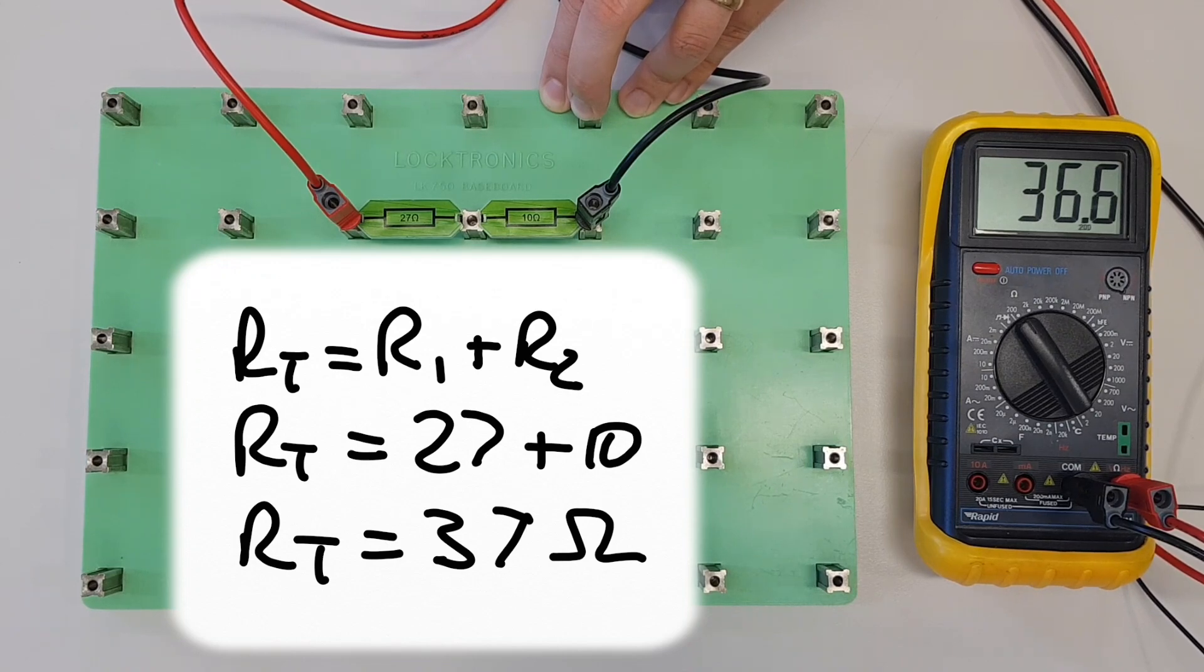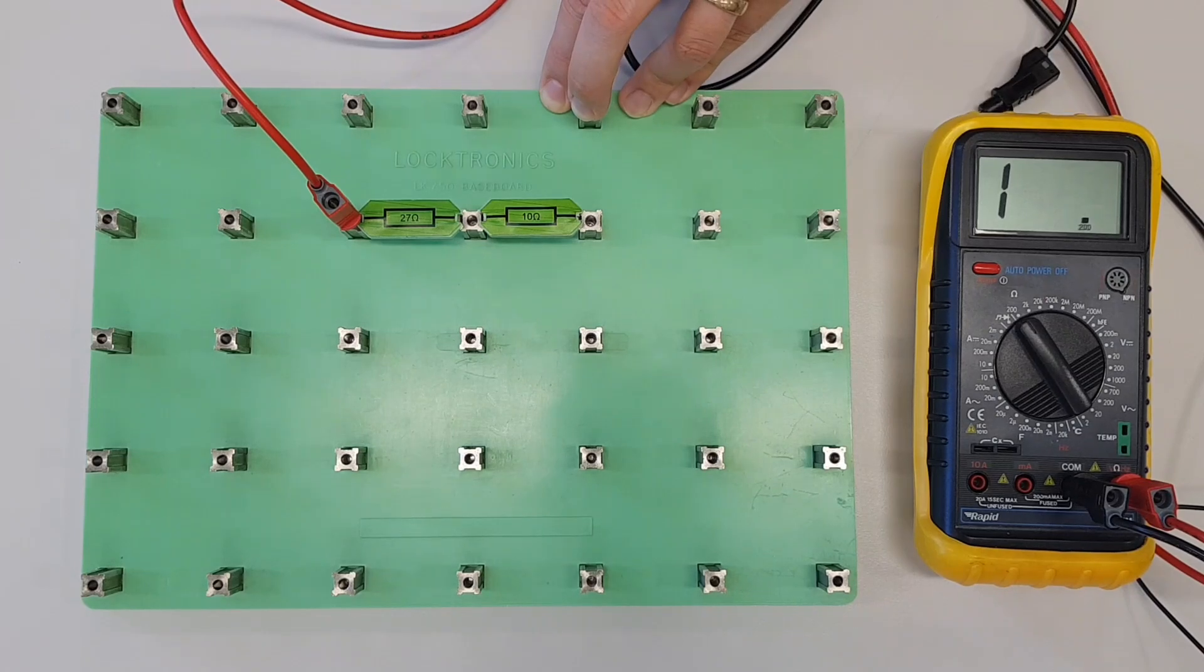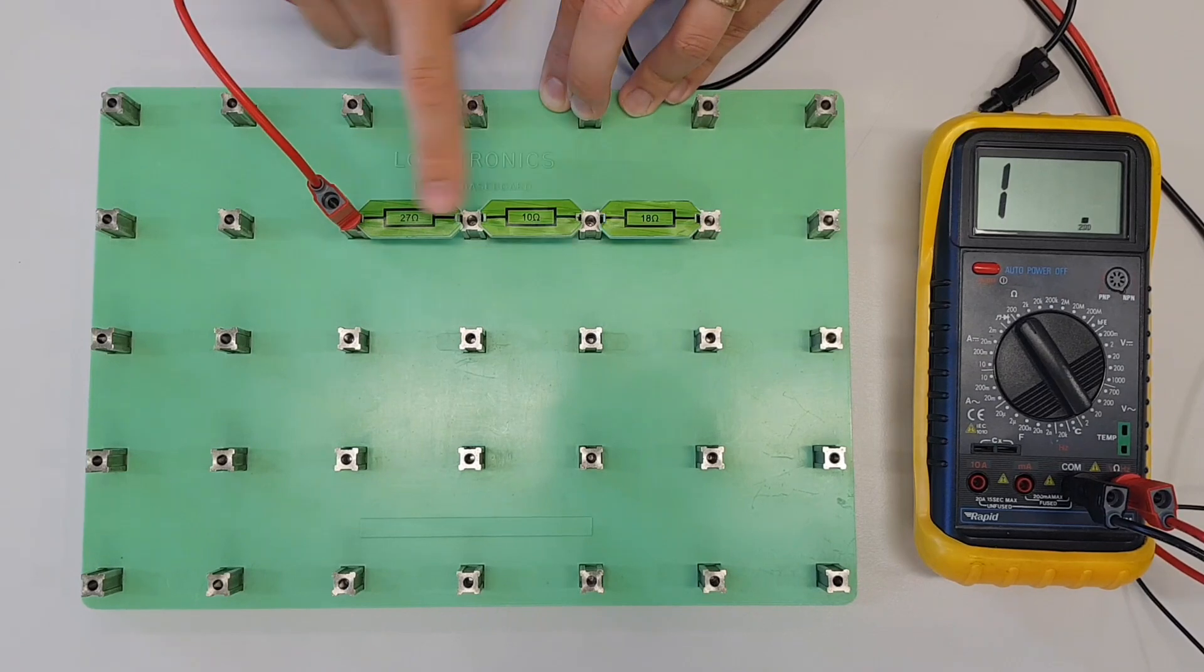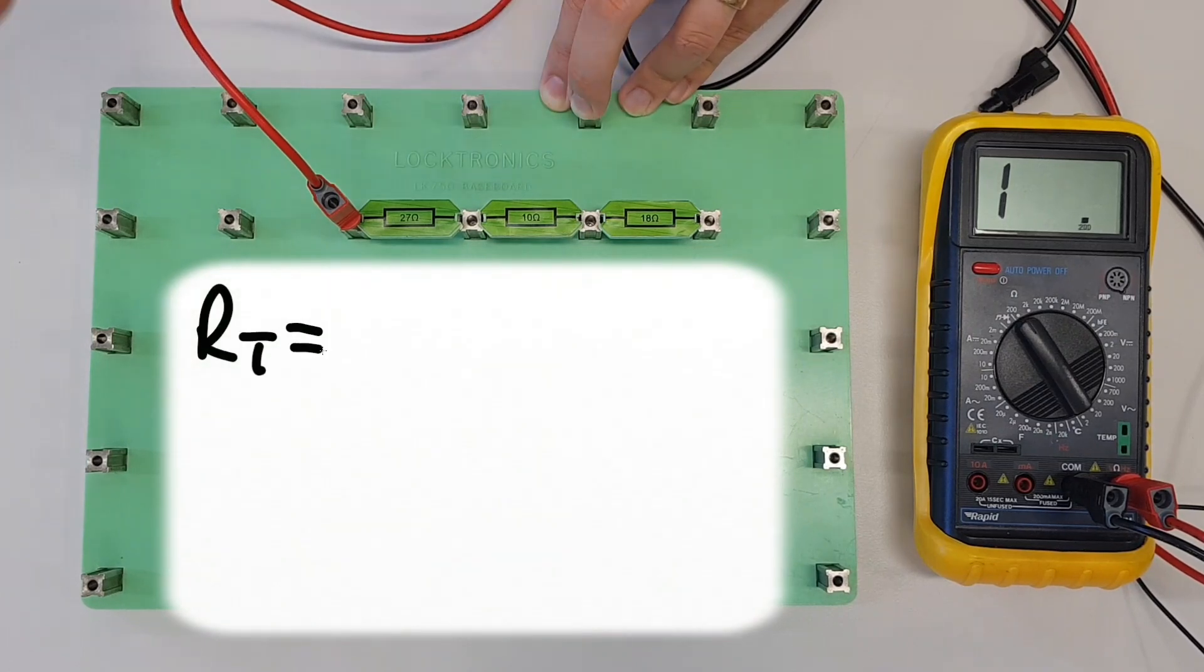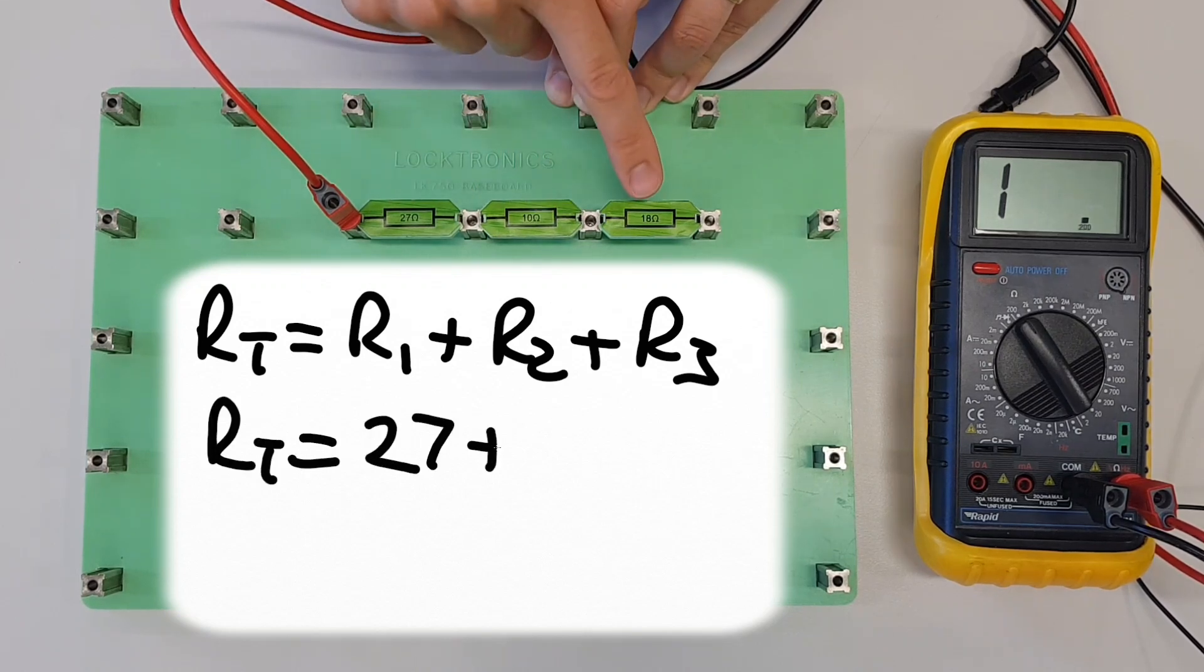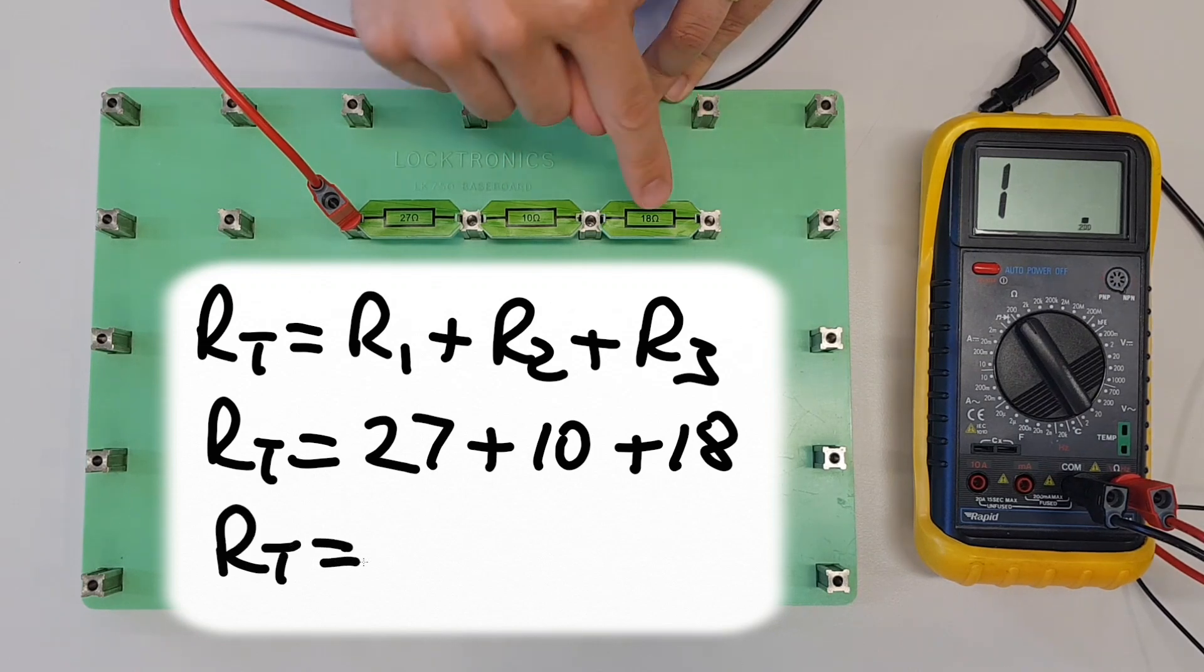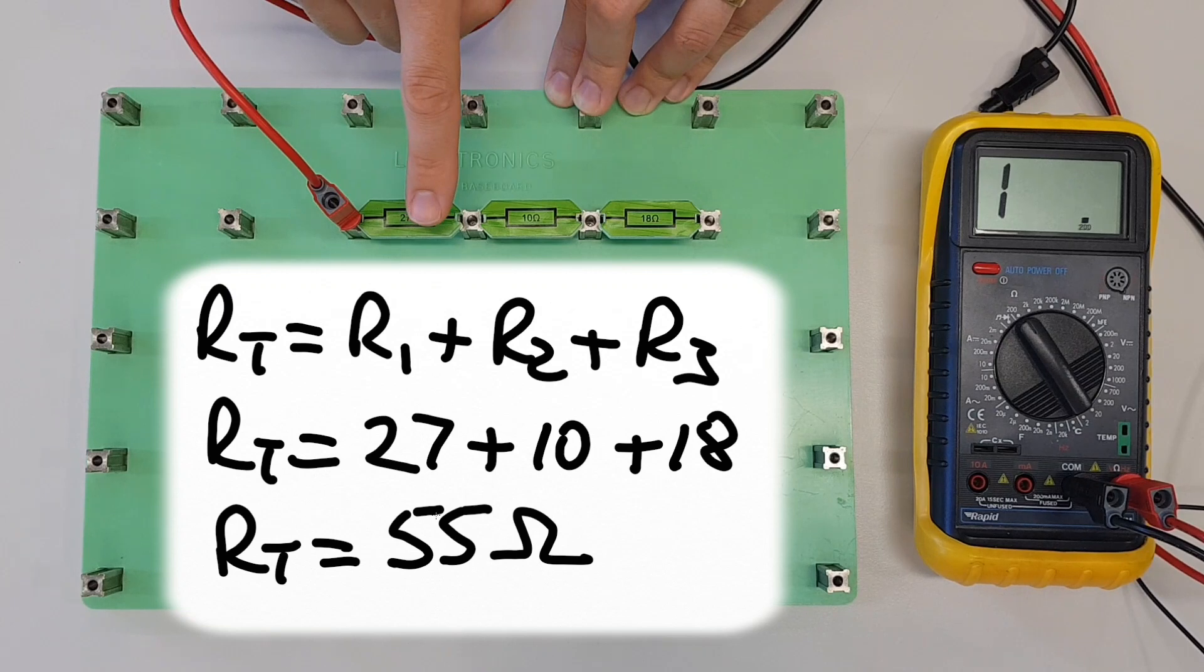We'll build one more circuit, a final circuit that's going to stretch the maths a little bit. Now we've got three resistors connected in series with each other: a 27 ohm, a 10 ohm, and an 18 ohm. Again, let's run through the maths: RT equals R1 plus R2 plus R3, so we've got 27 plus 10 plus 18. That's going to give us 27 plus 10 is 37, plus 18 should give us 55 ohms. Now bear in mind we're combining the tolerances of three different resistors, so we might not get exactly 55 ohms, but we should be very close.